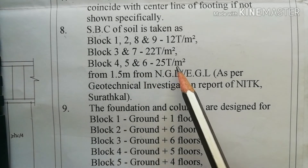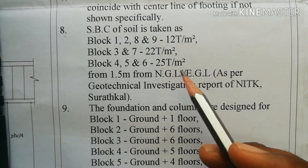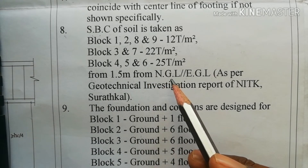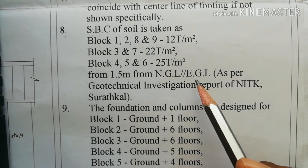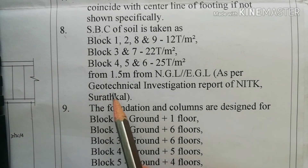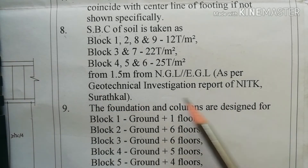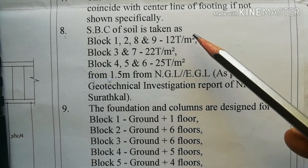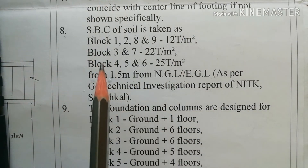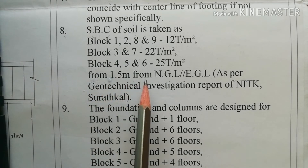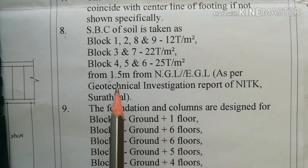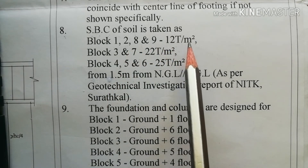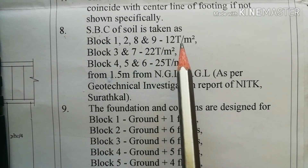For Blocks 4, 5, and 6, it is 25 tons per meter square. The bearing capacity is measured from 1.5 meters below natural ground level or existing ground level, as per the Geotechnical Investigation Report of NITK. Before construction, a soil test is compulsory starting from 1.5 meters from ground level.